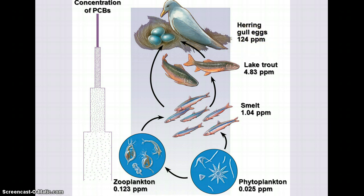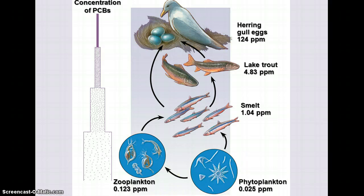Biomagnification can have negative impacts on the reproductive success of top-order consumers and others in the food chain, and some of these toxins can cause mutations in exposed species. This is what nearly led to the endangerment of bald eagles — chemicals accumulated through runoff worked their way up the food chain and prevented the highest-order consumers from reproducing successfully.